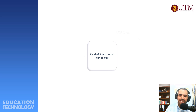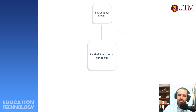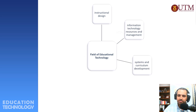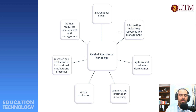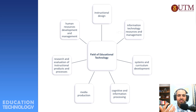Education technology is a whole process — you need to understand the problem, identify it, use the appropriate media, make sure students understand how to use the media, and make sure you have achieved your goals — otherwise the technology will be useless. To understand education technology better, you need to understand its fields: instructional design, information technology resources and management, systems and curriculum development, cognitive and information processing, research and evaluation of instructional products and processes, and human resources development and management.